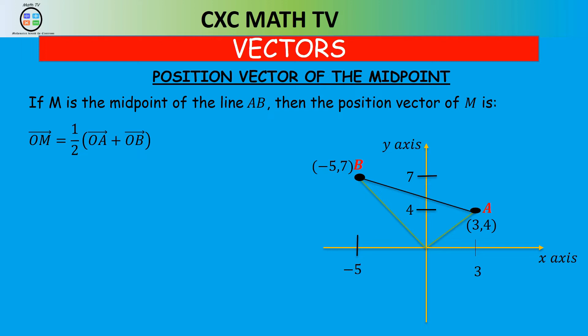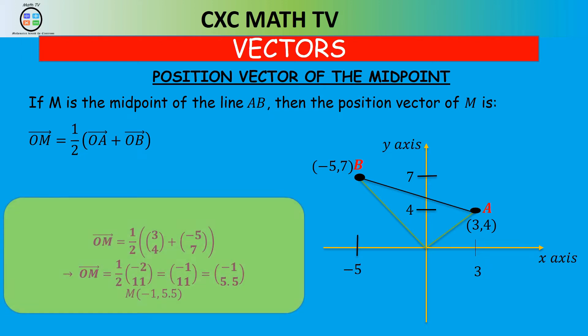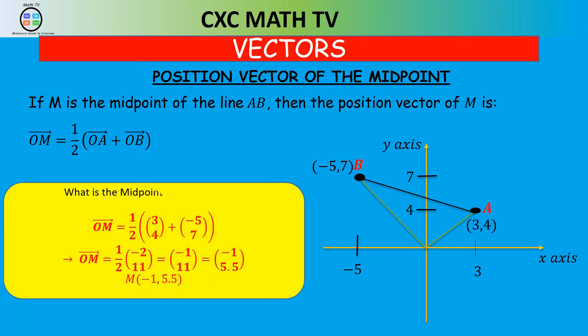For example, what is the midpoint of vector AB? Using the formula: vector OM = ½(OA + OB) = ½((3, 4) + (−5, 7)) = ½(−2, 11). A half of −2 is −1, and a half of 11 is 5.5. So the midpoint is (−1, 5.5).